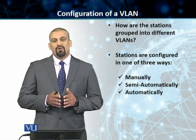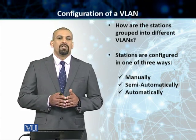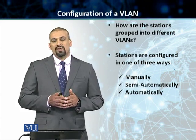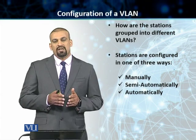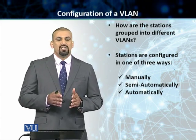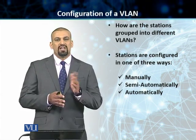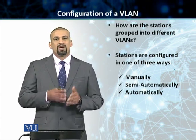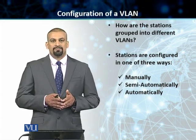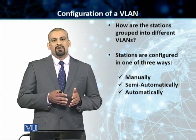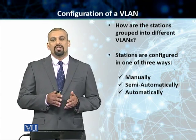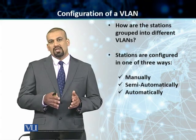In the case of automatic, you do it completely automatically. You can use the VLAN software — there are softwares available that allow you to define a rule. For example, if the port number on a particular machine changes, then change that machine from VLAN 1 to VLAN 2. So as soon as the port number on a particular user changes, that user automatically gets moved from VLAN 1 to VLAN 2, completely without any human intervention.